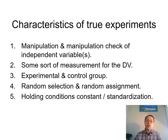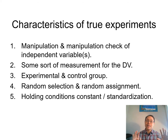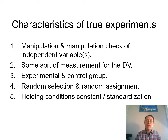The fifth characteristic of a true experiment is keeping the conditions constant. You have to make sure that whatever you do to the experimental group, you do exactly to the control group. Everything is exactly the same except the manipulation you're trying to do. This is the same as standardization — having an SOP to make sure that everything from the beginning to the end is done exactly the same way.